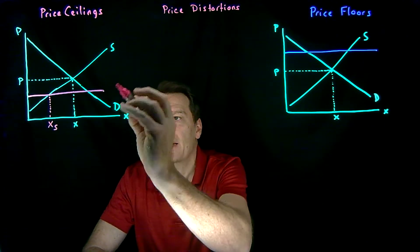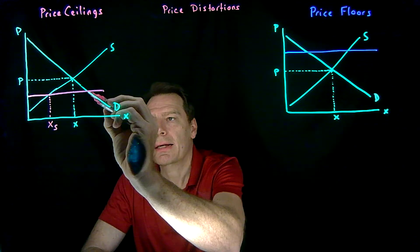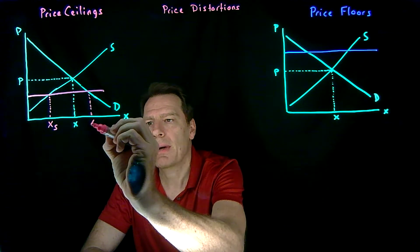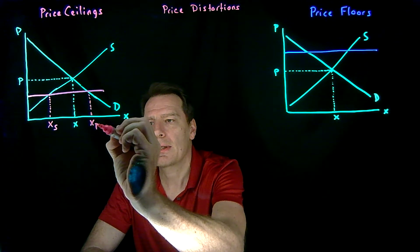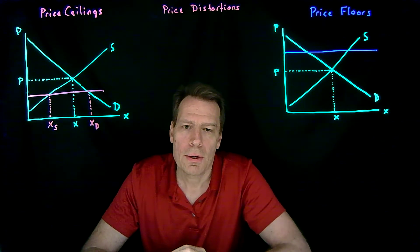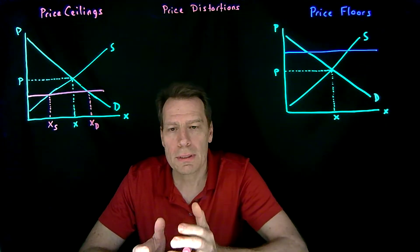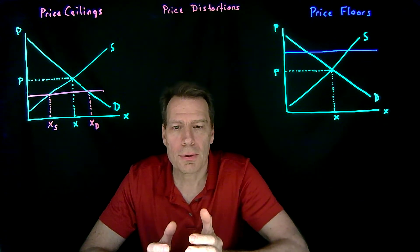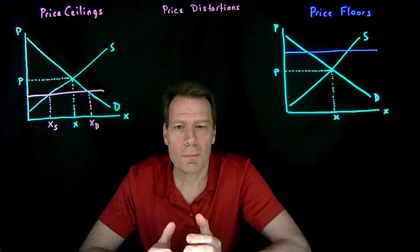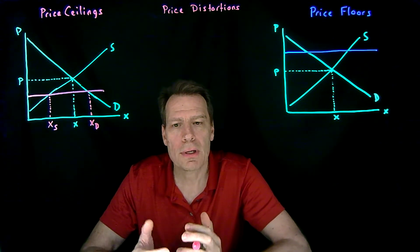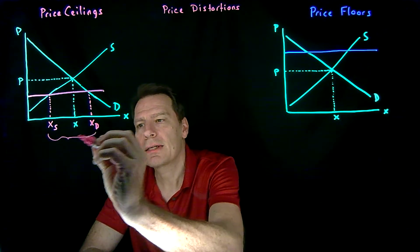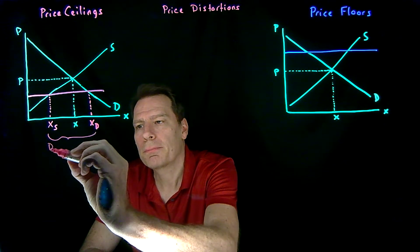But at that lower price, consumers would like to buy more, so the quantity demanded is increasing. The quantity demanded is no longer equal to the quantity supplied, which means we're no longer in equilibrium — we have a disequilibrium.